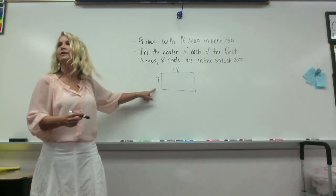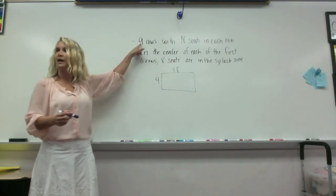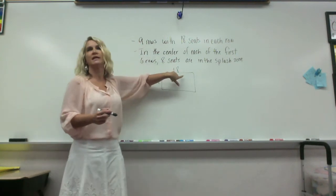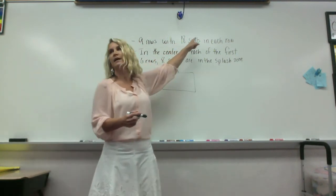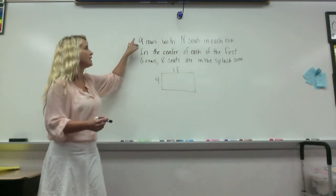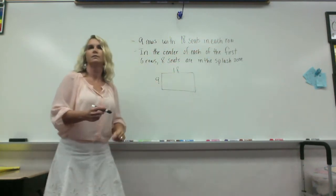Point to it on the board. Right here, nine rows. Raise your hand if you know where she gets the 18 from. Right there, right? So her nine rows with 18 seats in each row.